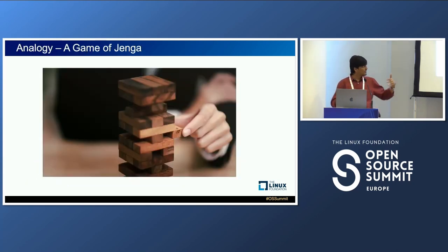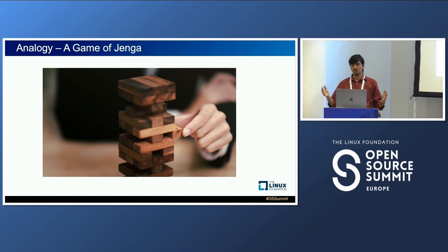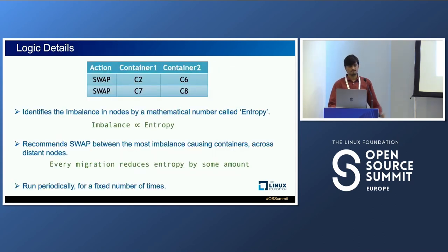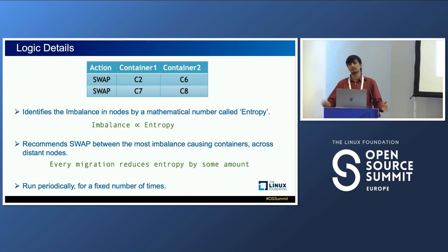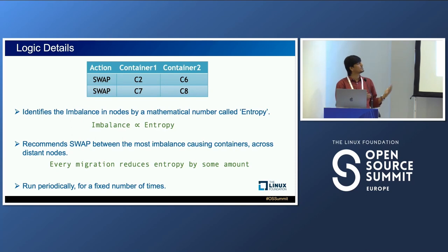This is analogous to playing a game of Jenga, where each row represents a node and each block is a container. In each turn, just like in the game, we remove the block with the least contribution to the overall balance of the Jenga structure. Similarly, we swap the containers causing the most imbalance and disparity in resource usage. We identify this imbalance using a mathematical construct called entropy — in the case of two resources, it's a CPU-to-memory ratio. We aim to have an equal ratio across all nodes, pursuing that with swap recommendations done periodically until we no longer observe a significant change in entropy values.